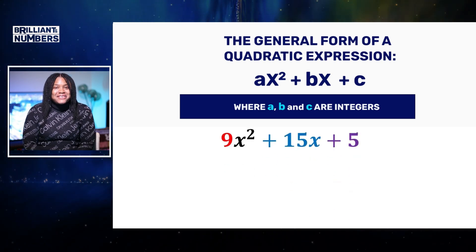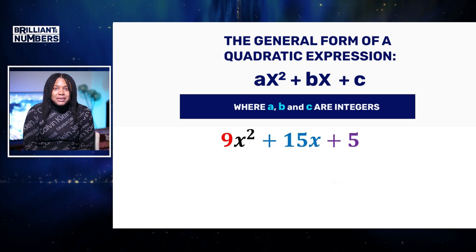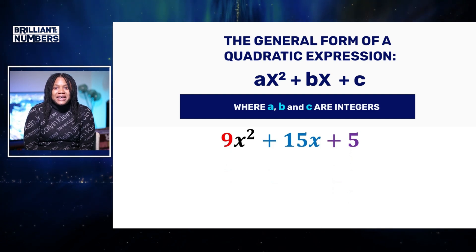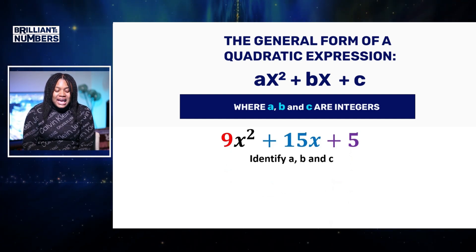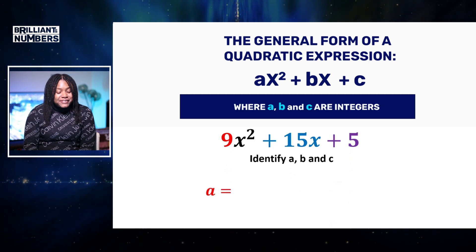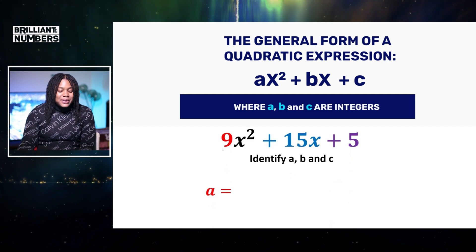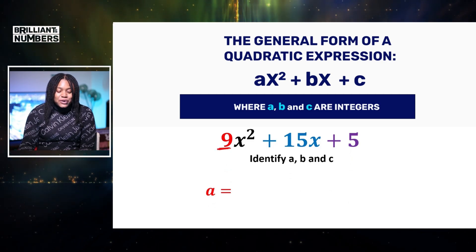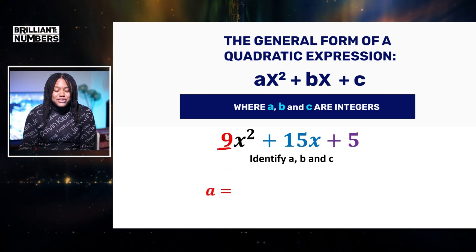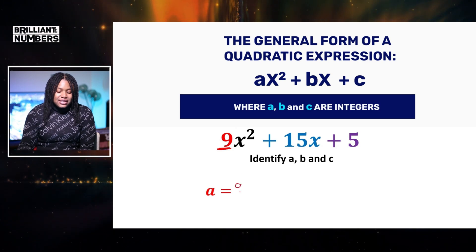Let's consider the example 9x squared plus 15x plus 5. A is the coefficient of x squared. Therefore, as we can see, I've also color coded it for it to be clear to you. So a is equal to 9.